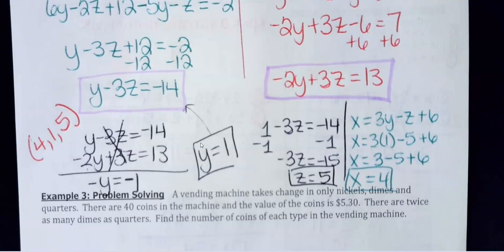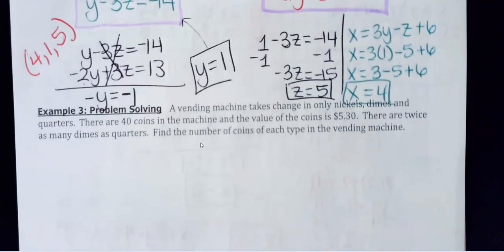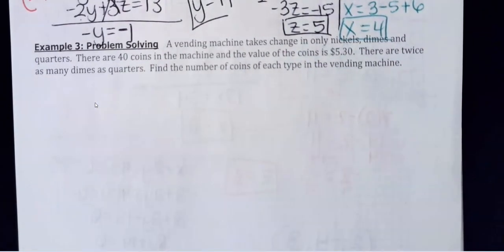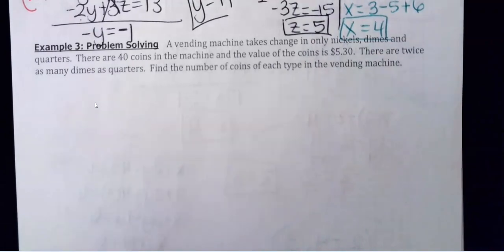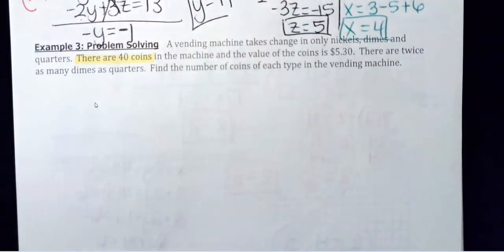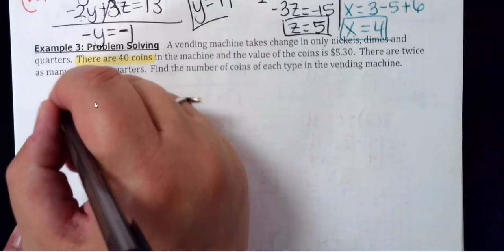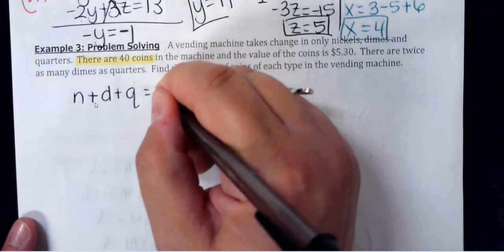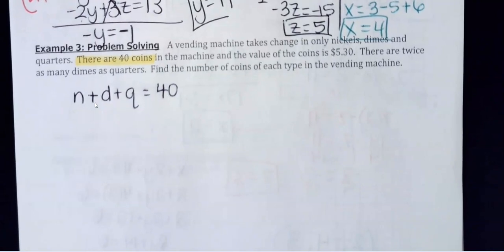Don't be intimidated by word problems — often they're easier than the algebraic ones, but you have to set up the equations. This vending machine problem has nickels, dimes, and quarters. First equation: there are 40 coins total, so n plus d plus q equals 40 — nothing to do with monetary value, just counting coins.